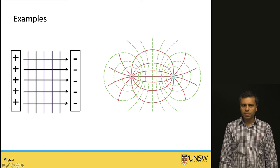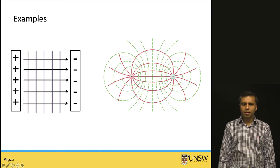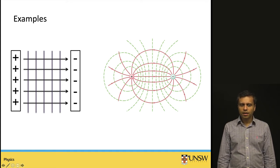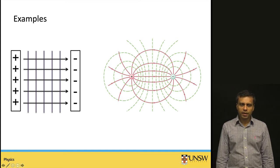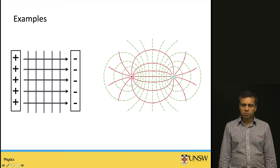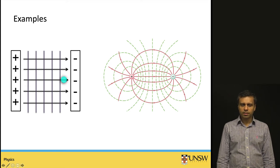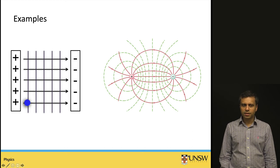For the parallel plate case, the field lines go from the positive plate to the negative plate, and the equipotential lines are perpendicular to these field lines. Moving a charge along one of these equipotential lines does no work. But moving from one equipotential line to another changes the potential, and work will be done.